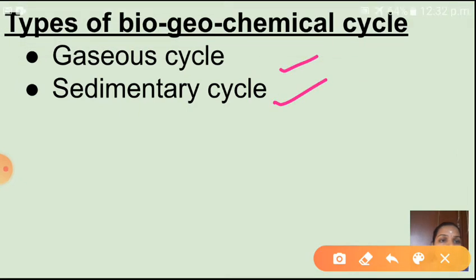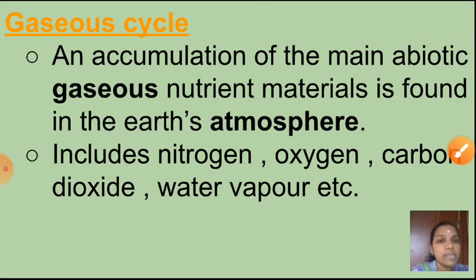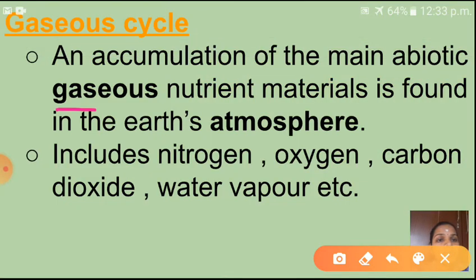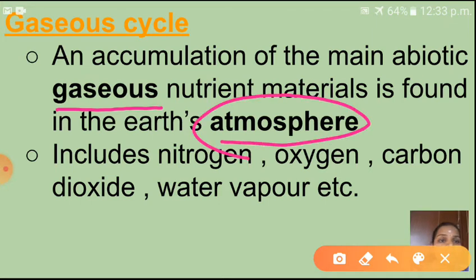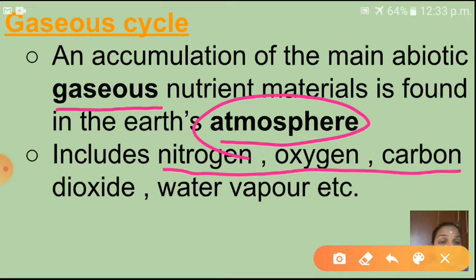What is meant by the gaseous cycle? An accumulation of the main abiotic gaseous nutrient materials is found in the Earth's atmosphere — our surroundings. This includes nitrogen, oxygen, carbon dioxide, water vapor, etc. All these gases are present in the atmosphere.